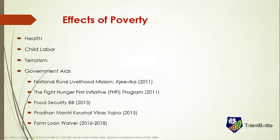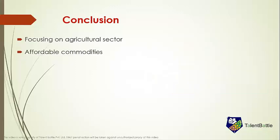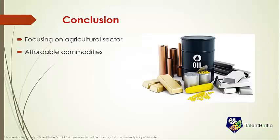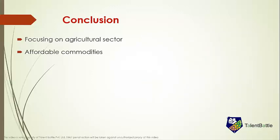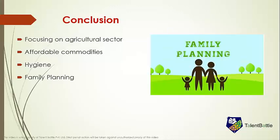Now let's see the steps to reduce poverty. Focusing on the agricultural sector: India is an agricultural country and the roots of our nation are buried deep in the farms. There is a lot of unemployment and lack of stability in the agricultural sector; if strengthened, this sector can help reduce poverty to a great extent. Bringing stability in the pricing of essential commodities will also make them affordable to everyone. Drinking water and sanitation should be made available to all, as a country can grow only if it is physically healthy. The ever-increasing population has been the root cause of poverty, thus there is a need to impose proper laws with regard to family planning and conduct family planning workshops in rural areas.